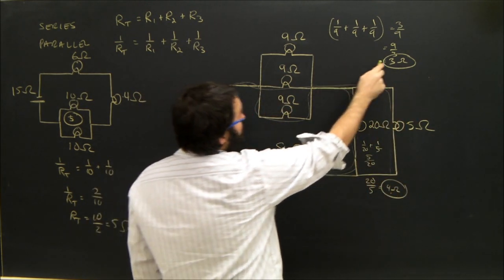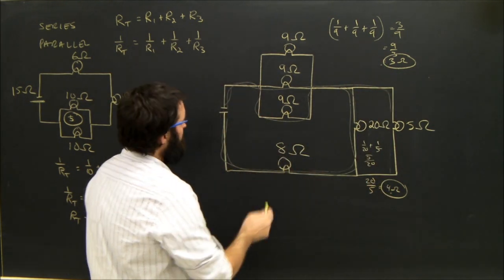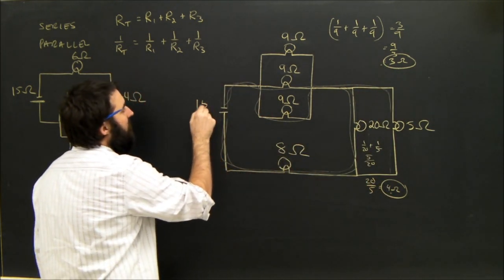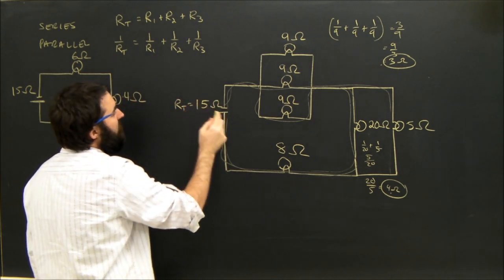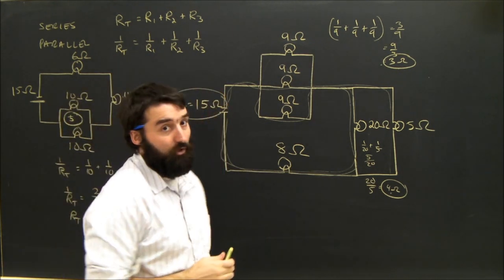We've got 3, 4, and 6. So once again, our total resistance is going to be 15 ohms.